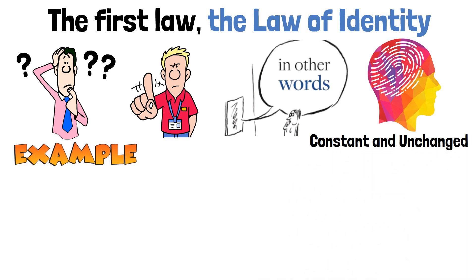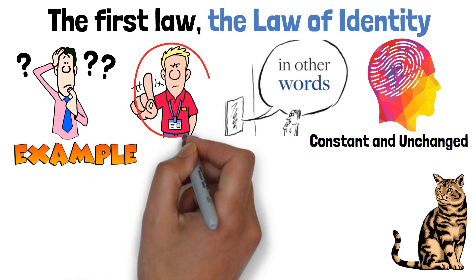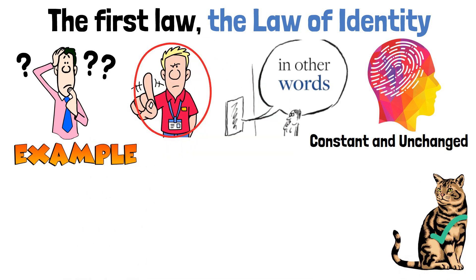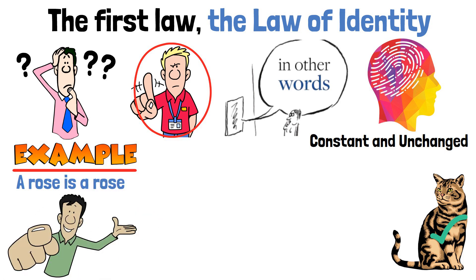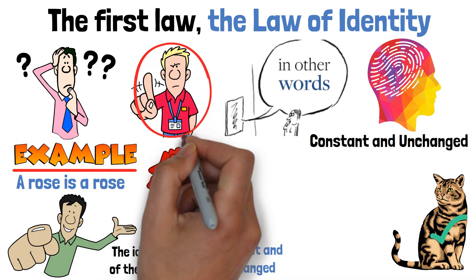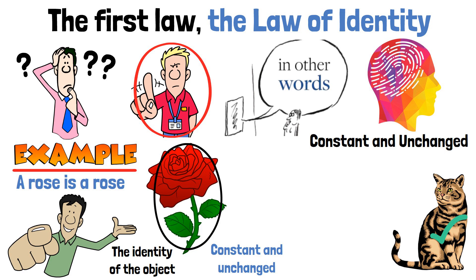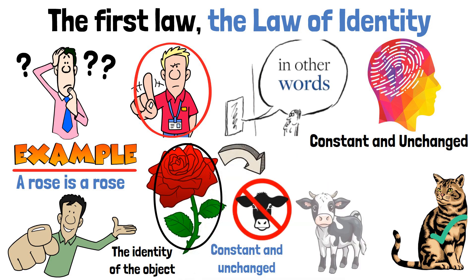For example, a cat is a cat, and it cannot be anything other than a cat. A rose is a rose — this statement asserts that the identity of the object referred to as rose remains constant and unchanged. It cannot be anything other than a rose. A rose is not a cow, and a cow is not an airplane.